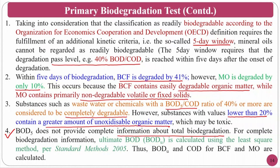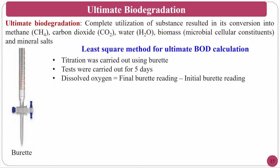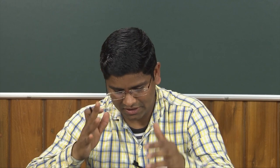BOD₅ cannot provide complete information about total biodegradation, but it gives a preliminary idea — above 40% suggests mostly degradable, below 20% indicates dominated by non-degradable parts. For complete biodegradation information, ultimate BOD (BOD_U) is calculated using the least square method from the 5-day experiment data. Ultimate biodegradation means complete conversion into methane, carbon dioxide, water, biomass, minerals, and salts.